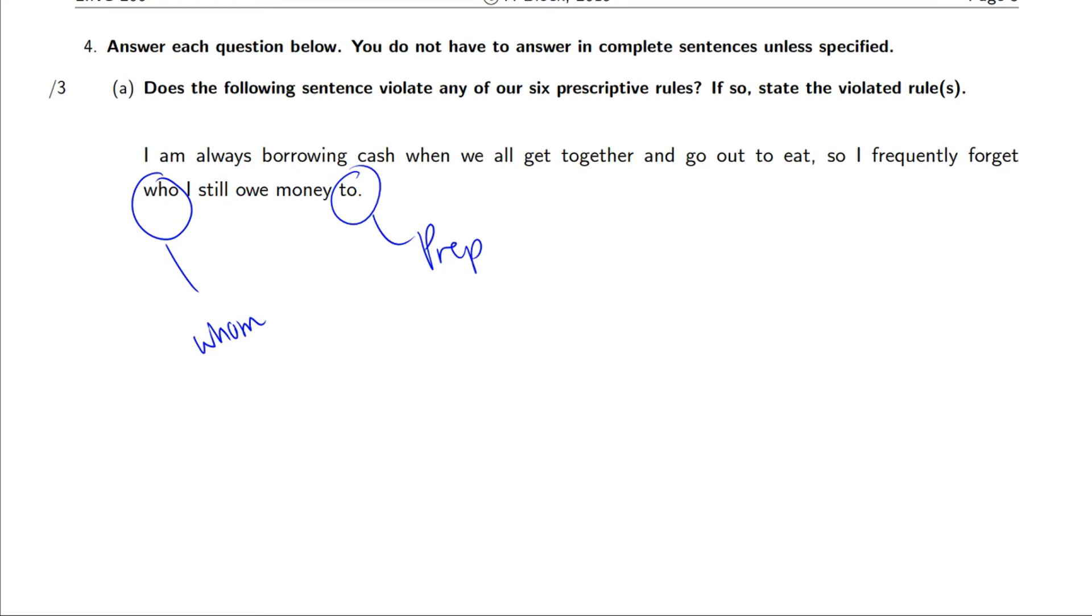Because we can say, so I frequently forget to whom I still owe money. Okay, so that would be two rules violated. And one last important thing about these questions, I ask you, does the following sentence violate any of our six prescriptive rules? You must explicitly say yes. You must answer the question. Because if you don't say yes, then I might be thinking that you're just saying, well, maybe these are the rules. I'm not 100% committed. You have to explicitly answer the question.